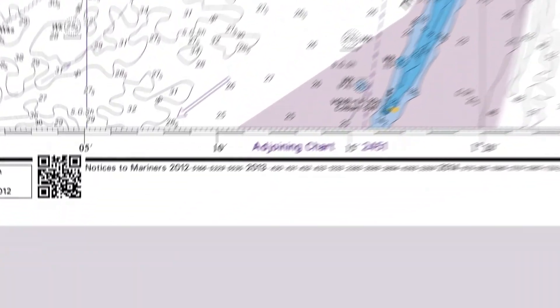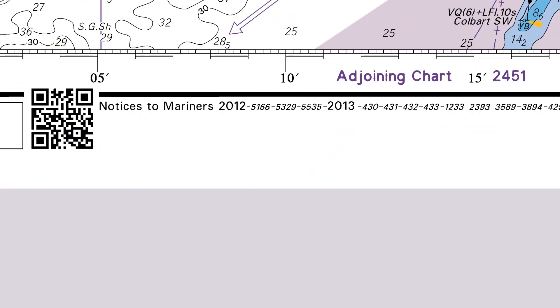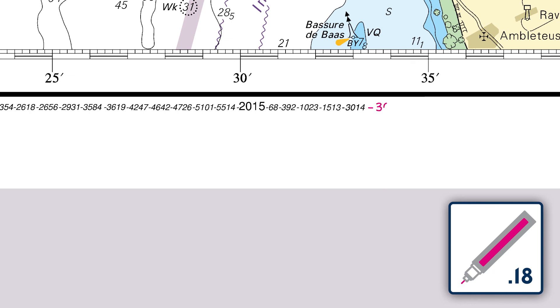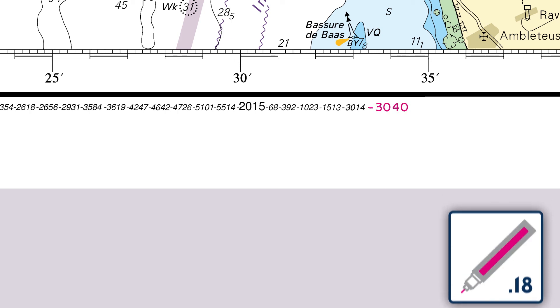Once all the updates have been applied, add the NM update number to the chart's Notices to Mariners section in the bottom left corner of the chart.